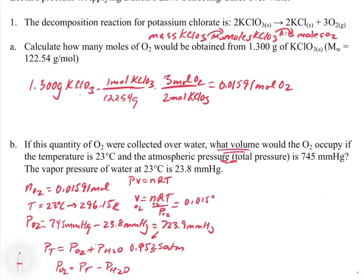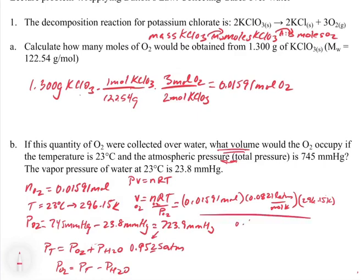Plugging in our values: n = 0.01591 moles, R = 0.0821 L·atm/mol·K, T = 296.15 K, and P = 0.9525 atm, we calculate V = nRT/P, which gives us 0.406 liters of oxygen gas.